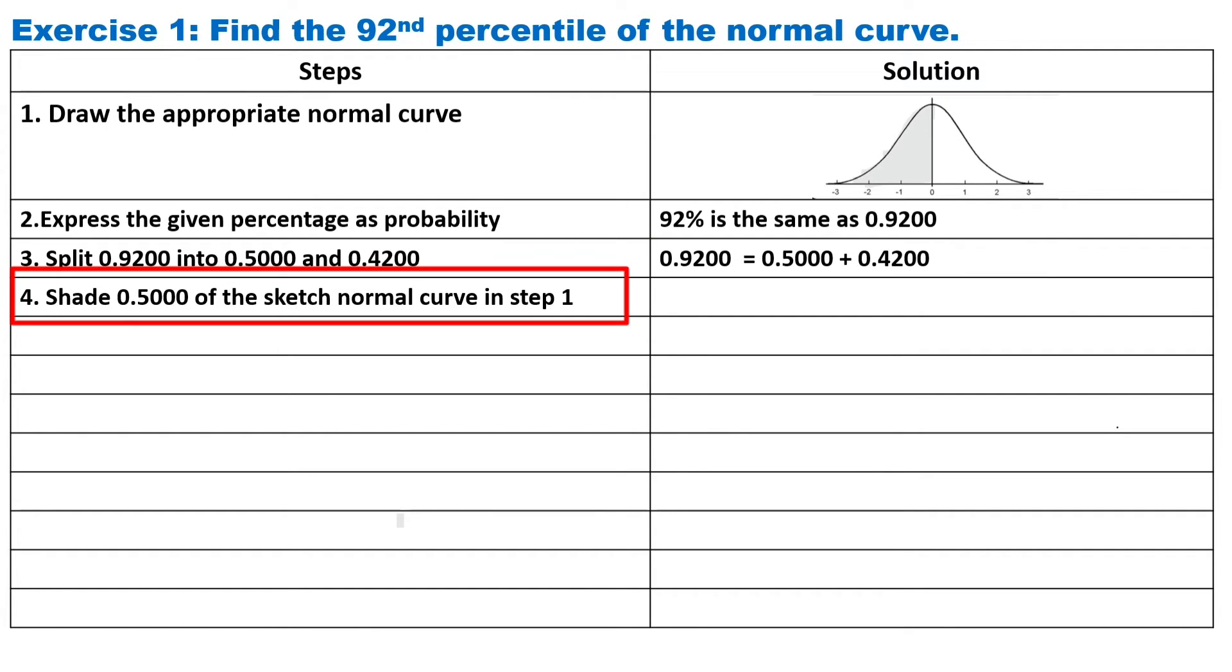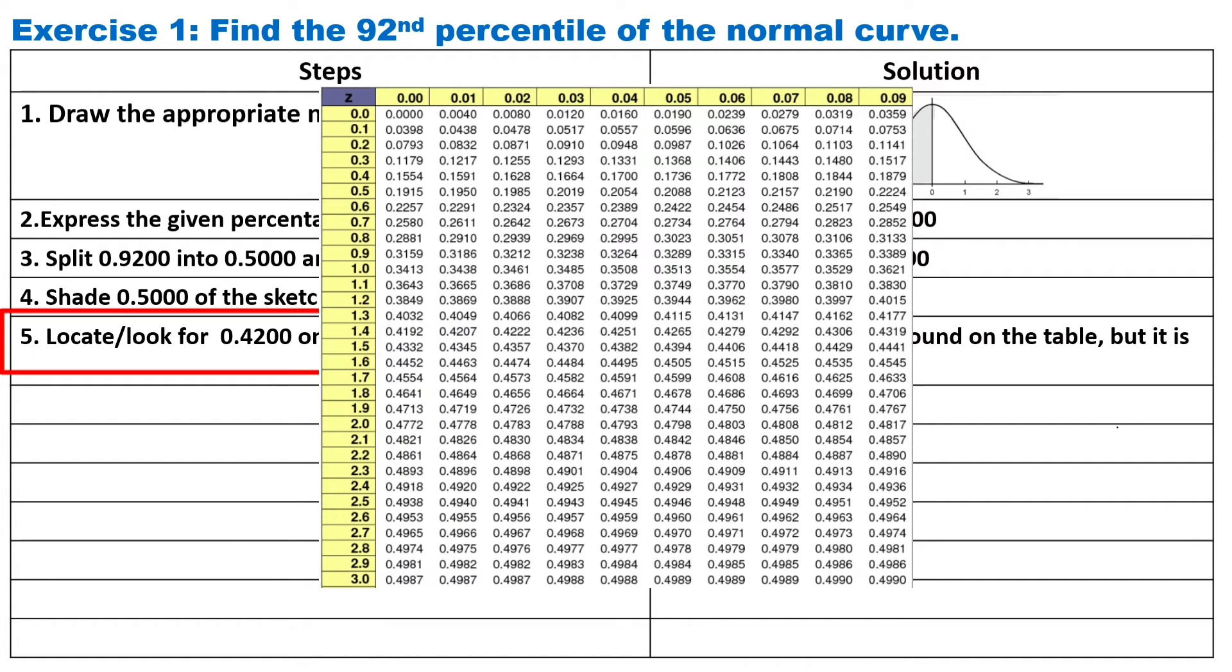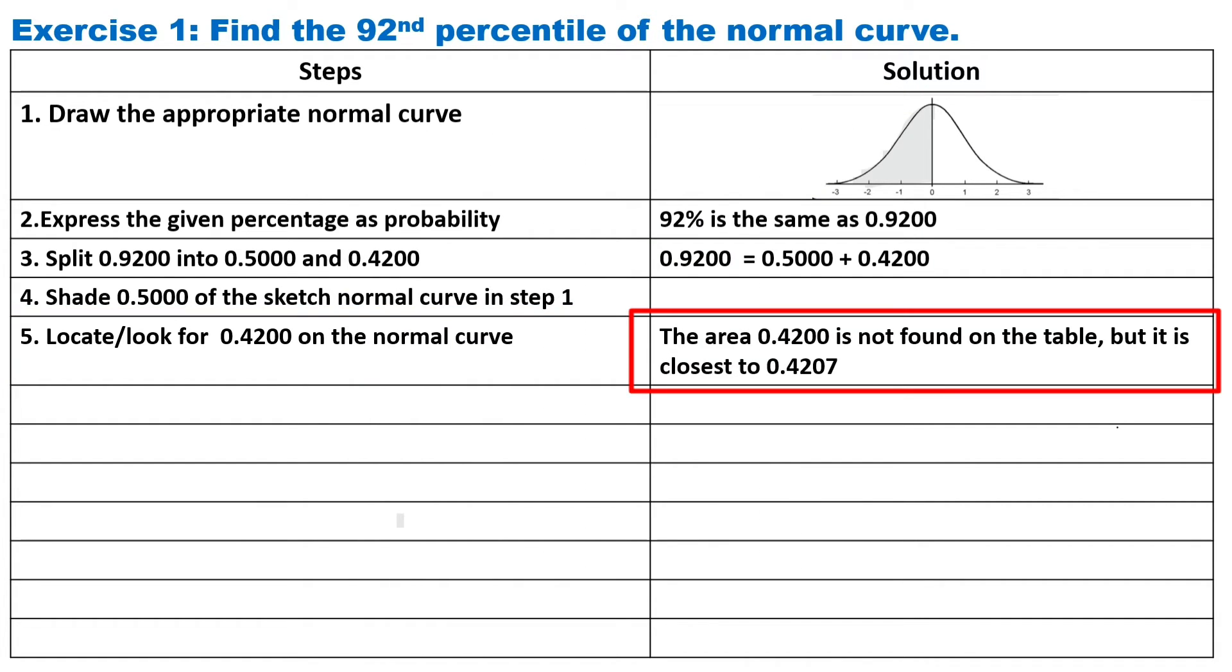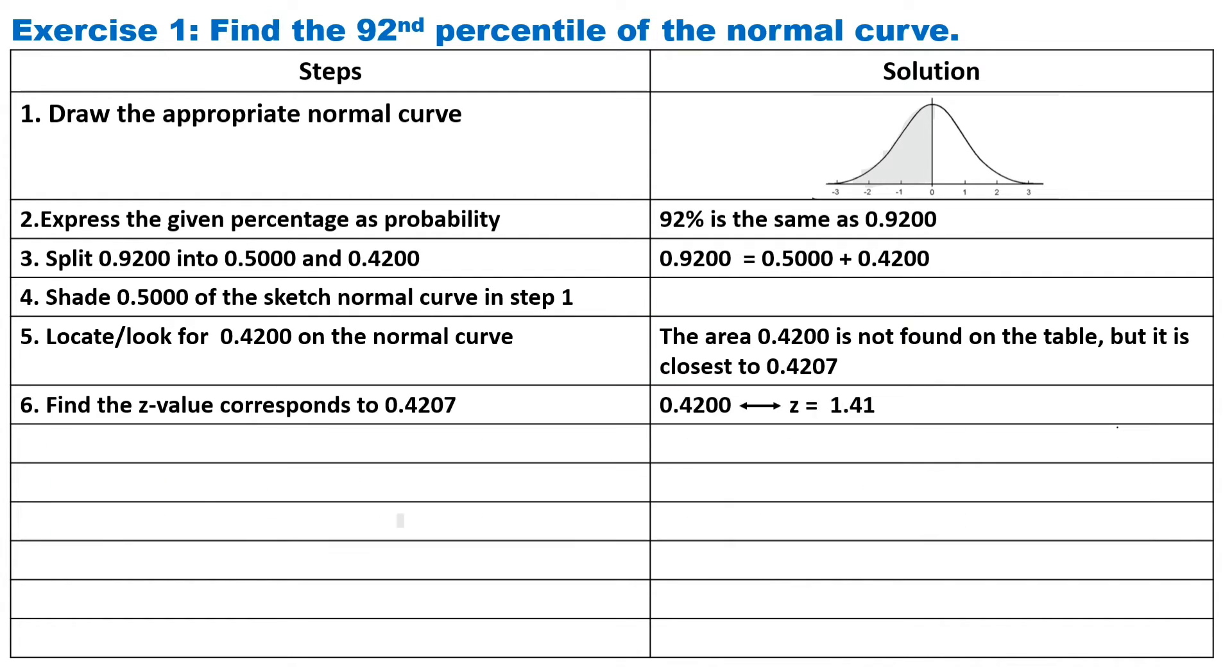Step four, shade 0.5000 on the sketch normal curve in step one. Step five, locate or look for 0.4200 on the normal curve area. The area 0.4200 is not found on the table, but it is closest to 0.4207.